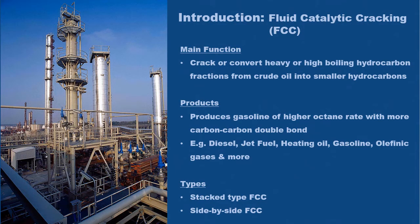The next process is the fluid catalytic cracking system. A fluid catalytic cracking system, or FCC, is used to crack or convert heavy or high boiling hydrocarbon fractions from crude oil into smaller hydrocarbons to be processed into useful products. The FCC unit in a refinery plant produces products such as gasoline of higher octane rate with more carbon-to-carbon double bonds. Other examples of products are diesel fuel, jet fuel, heating oil, gasoline, off-gases, and more.